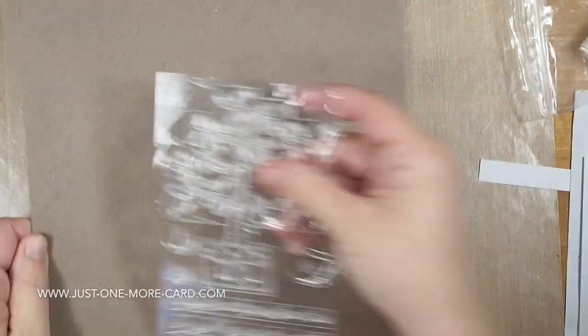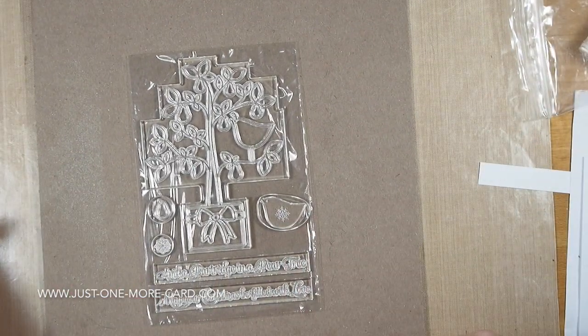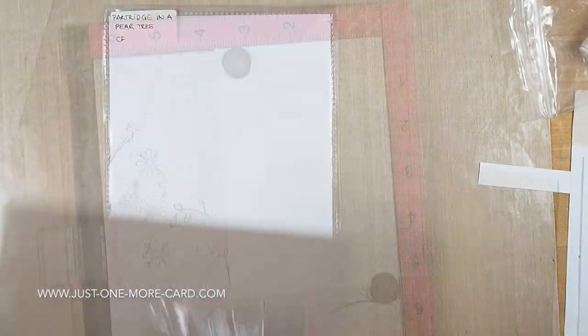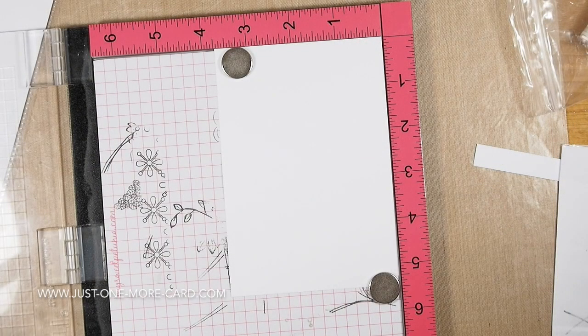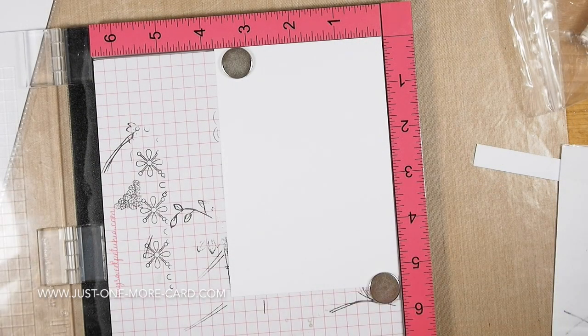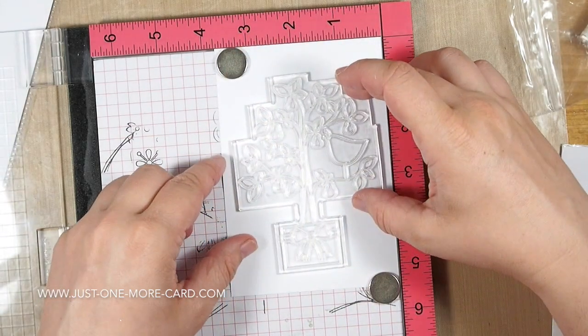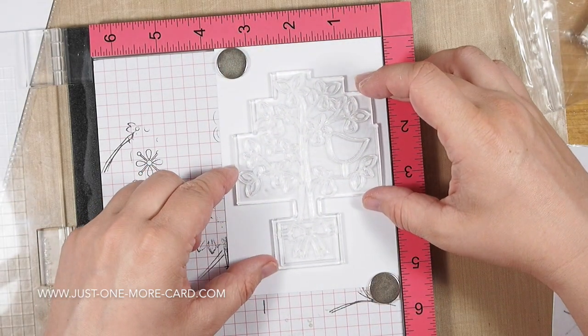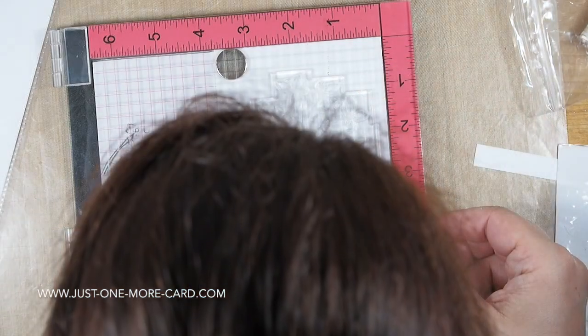I'm going to be using the partridge in a pear tree stamp set. I'm showing this against a darker background so you can see it a little bit better. I'm using my Misti to stamp it. You absolutely do not have to use a Misti. You can use a regular acrylic block, a larger one in that case. This is just the stamping tool that I'm using.